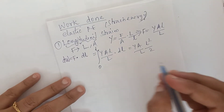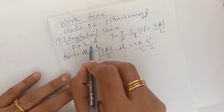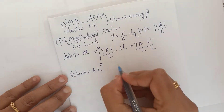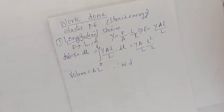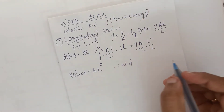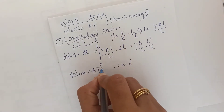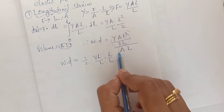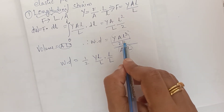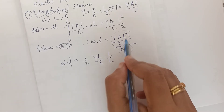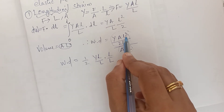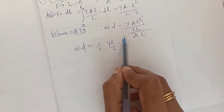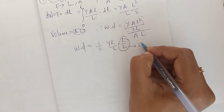The volume of the wire is A × L. Therefore, work done per unit volume equals the total work divided by volume A·L. With A and A cancelling, we get work done per unit volume = (1/2) × Y × (ΔL/L) × (ΔL/L). Here ΔL/L is what we call strain.